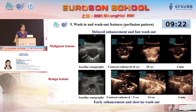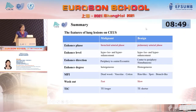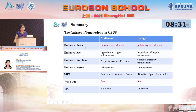Wash-in and wash-out features are also informative. Delayed enhancement and fast washout are seen in malignant lesions, while early enhancement and slow washout are seen in benign lesions. TIC can help display the perfusion pattern; one paper reported that enhancement time was significantly shorter in inflammatory lesions than other lesion types. In summary, CEUS features distinguishing malignant from benign lung lesions include enhancement phase, level, direction, degree, micro-flow imaging pattern, washout, and TIC — with enhancement phase and washout time being the most important.